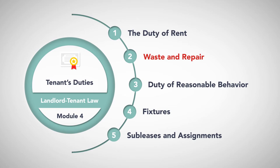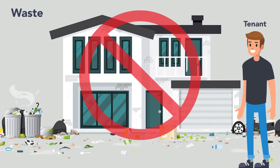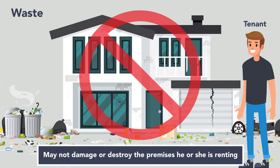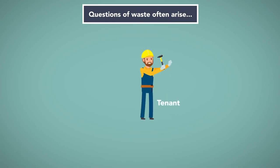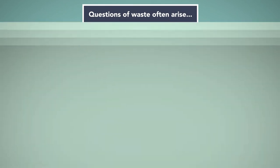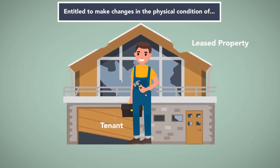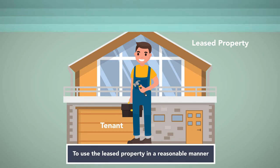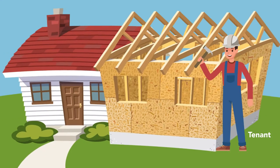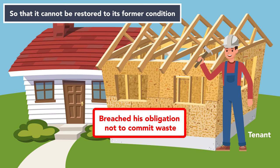Waste and Repair. The tenant has a duty not to commit waste. This means that a tenant may not damage or destroy the premises he or she is renting. Questions of waste often arise when the tenant makes structural changes to the property. A tenant is entitled to make changes in the physical condition of the leased property which are reasonably necessary for the tenant to use the leased property in a reasonable manner. However, if the tenant makes changes so that the property cannot be restored to its former condition, the tenant has breached his obligation not to commit waste.